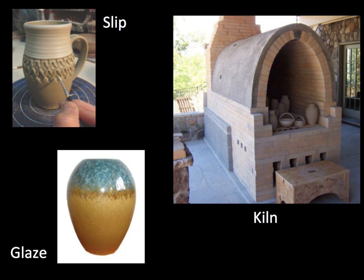There are many different methods to create the forms: slab building, hand building, coil building, and throwing — which uses a rapidly revolving potter's wheel. Regardless of those techniques, the decorating and firing process turns out the same. Those are the examples from the last section of sculpture, which is ceramics.